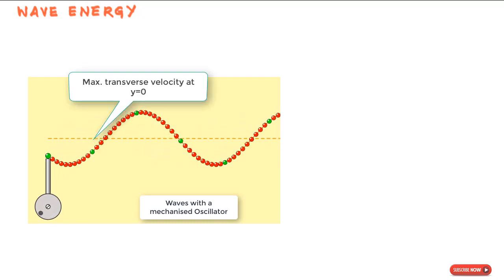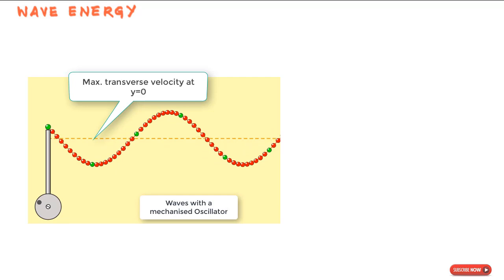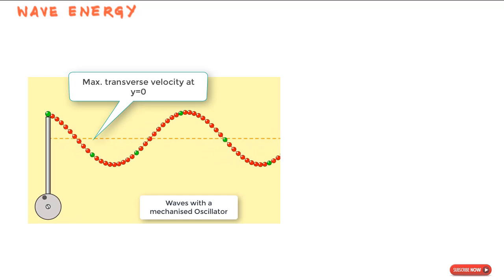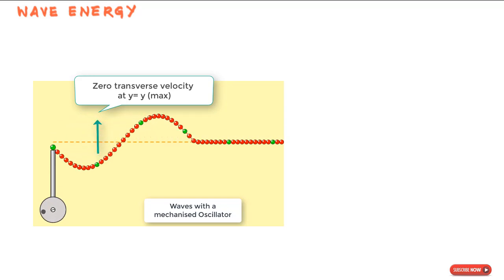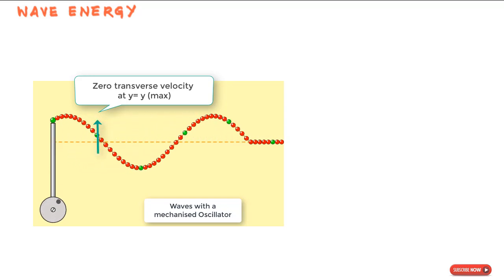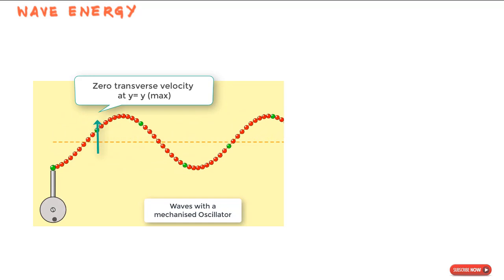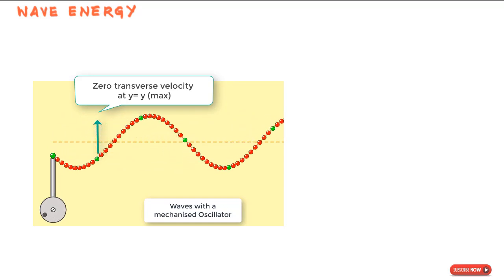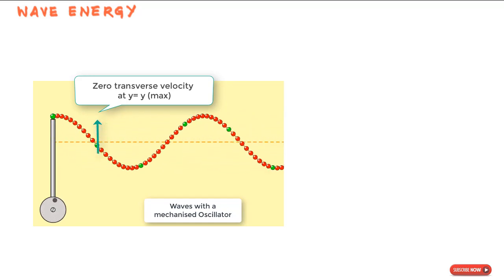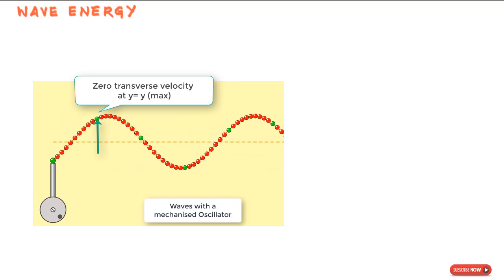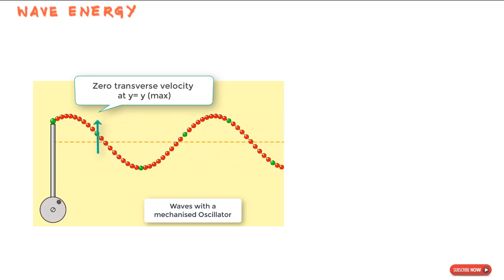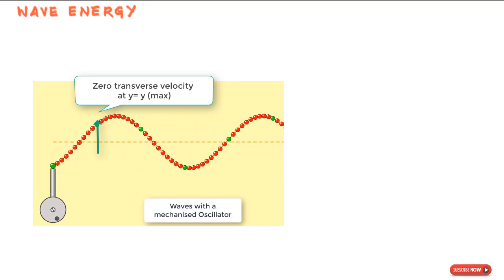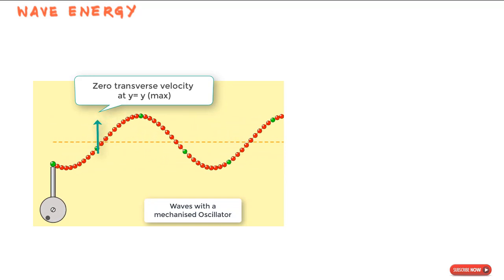At the extreme y positions, the velocity is zero and so is the kinetic energy. Kinetic energy becomes zero because at extreme positions the mass comes to rest — it is turning back towards the mean position.